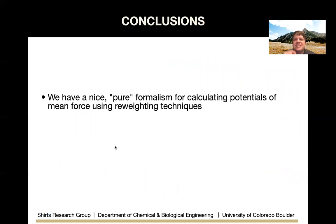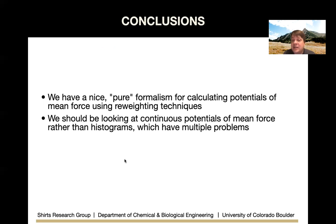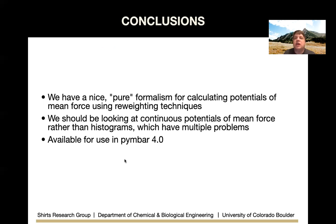In conclusion, we have a principled formalism for calculating potentials of mean force using reweighting techniques — going directly from an empirical distribution and using maximum likelihood and Bayesian inference to produce a continuous distribution. We should be computing continuous potentials of mean force rather than histograms, which have problems both in binning and in determining weights when using WHAM. This is available in PyMBAR 4.0, which should be released very soon, and there's already a branch with all this functionality included. Thank you so much.